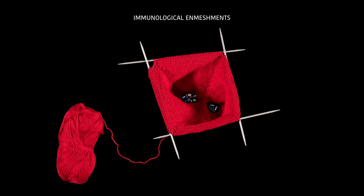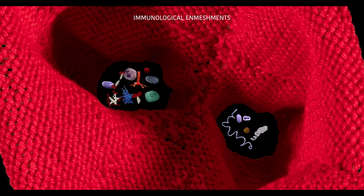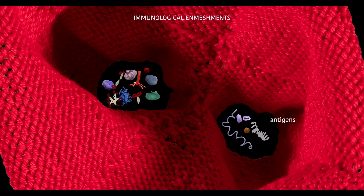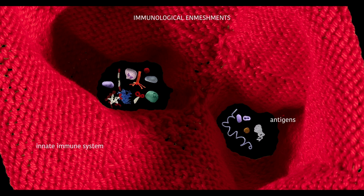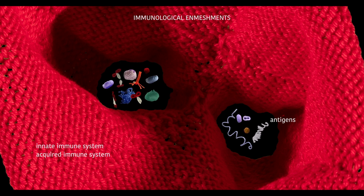There are many different components that the immune system deploys to fend off pathogens or foreign substances, the so-called antigens. A distinction is made between the innate immune system, which can react immediately, and the acquired immune system, which is only developed later in life.